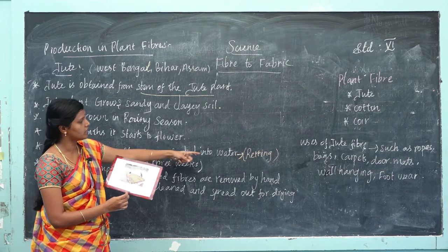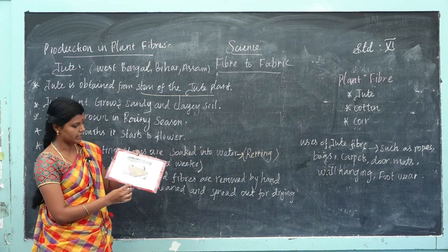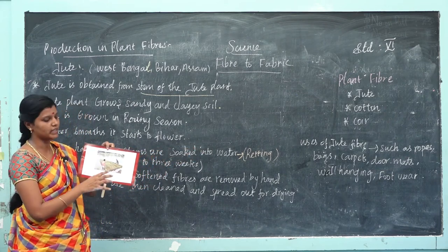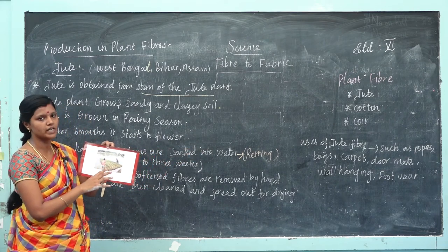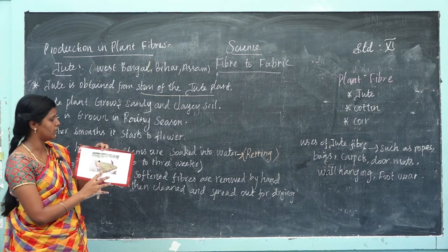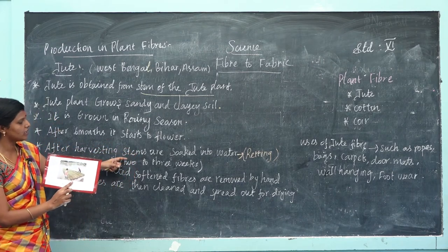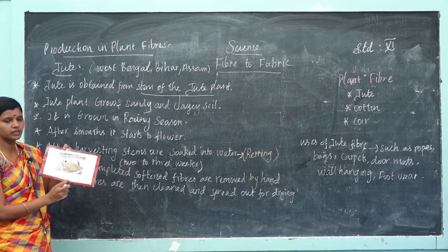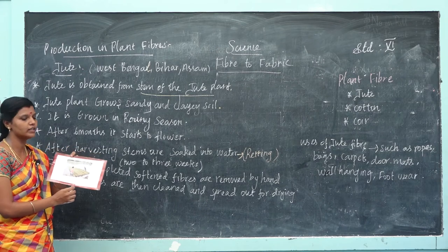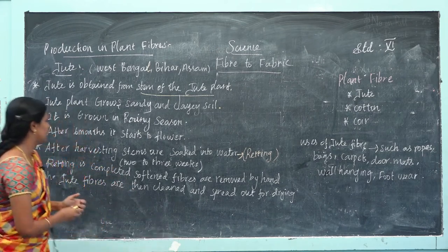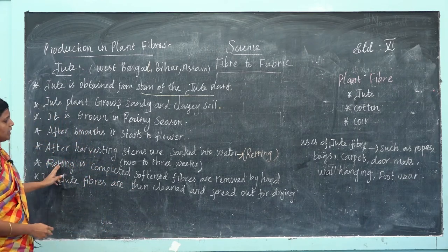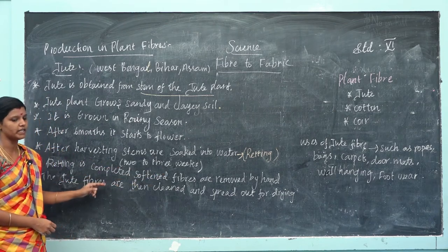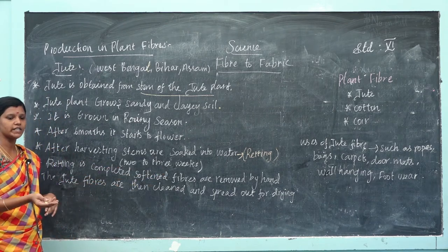After harvesting, the stems are soaked into water. This process is called retting of jute plants. The jute plant is soaked for 2 to 3 weeks. This process is called retting. After retting is completed, the softened fibers are removed by hand.